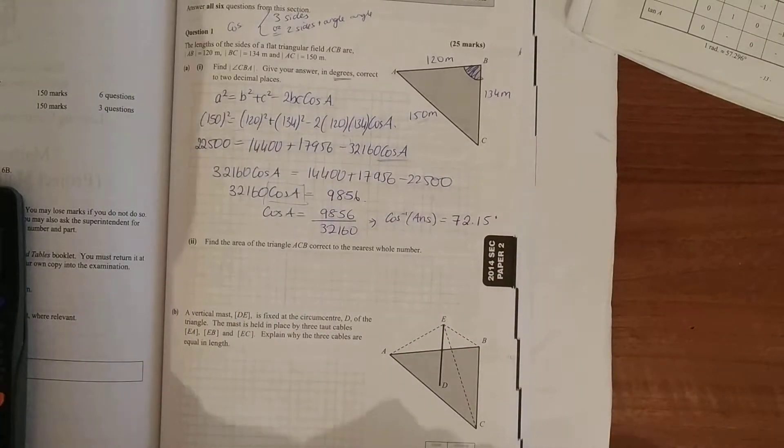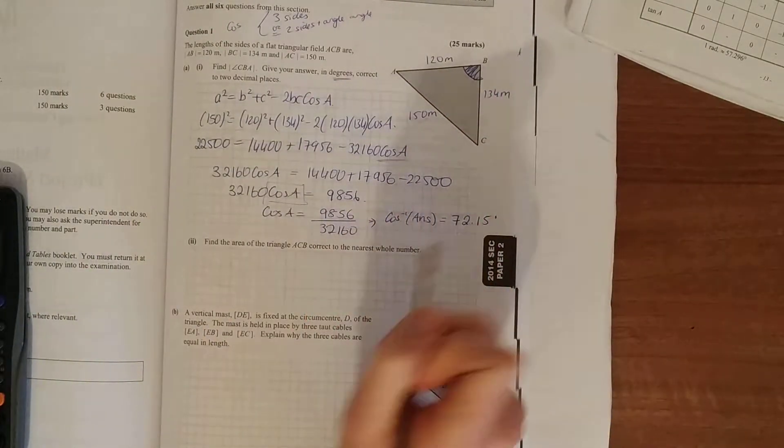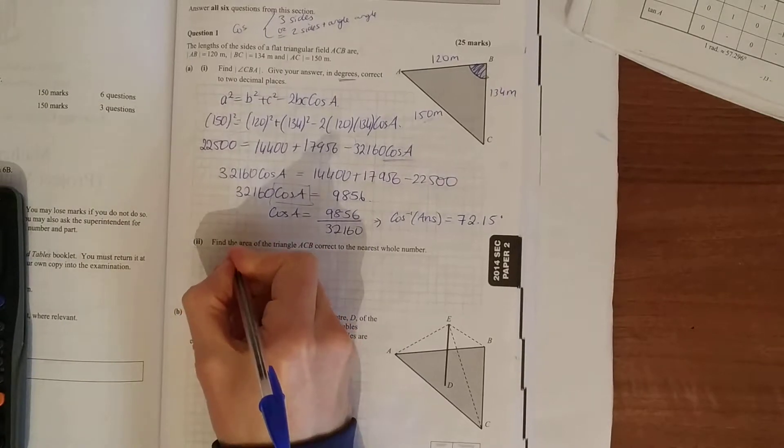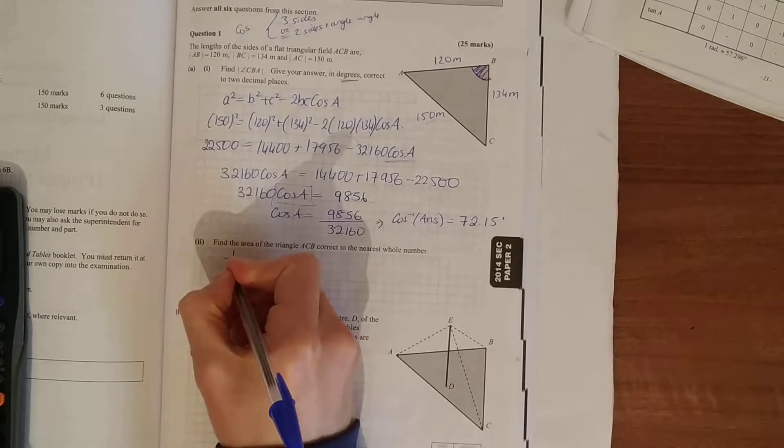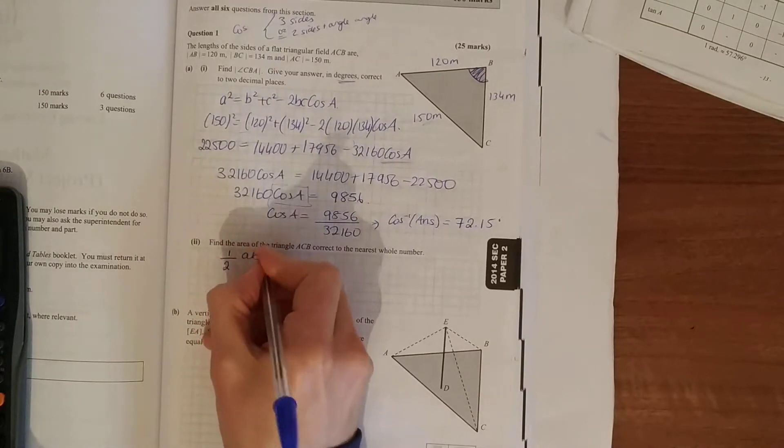Lovely. Find the area of the triangle ACB correct to the nearest whole number. So again we can't use half the base by height, but we can use half AB times BC times sin of the included angle.